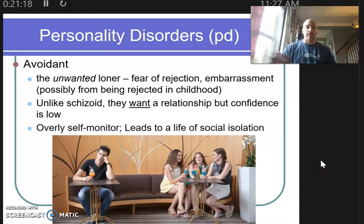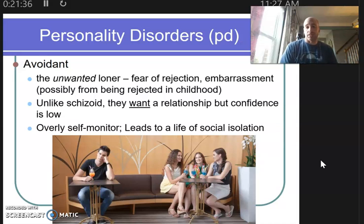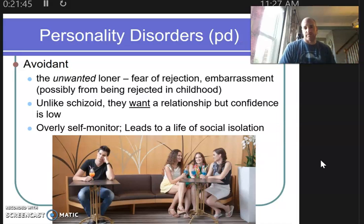Unlike schizoids, avoidants want a relationship, but because their confidence is so low, they will often stay indoors and avoid social situations altogether. They're overly self-monitoring — double and triple checking the things they say to someone else, quadruple checking a tweet, posting something and then deleting it because of that fear of embarrassment. That's an avoidant personality — people who really struggle to conquer those fears.